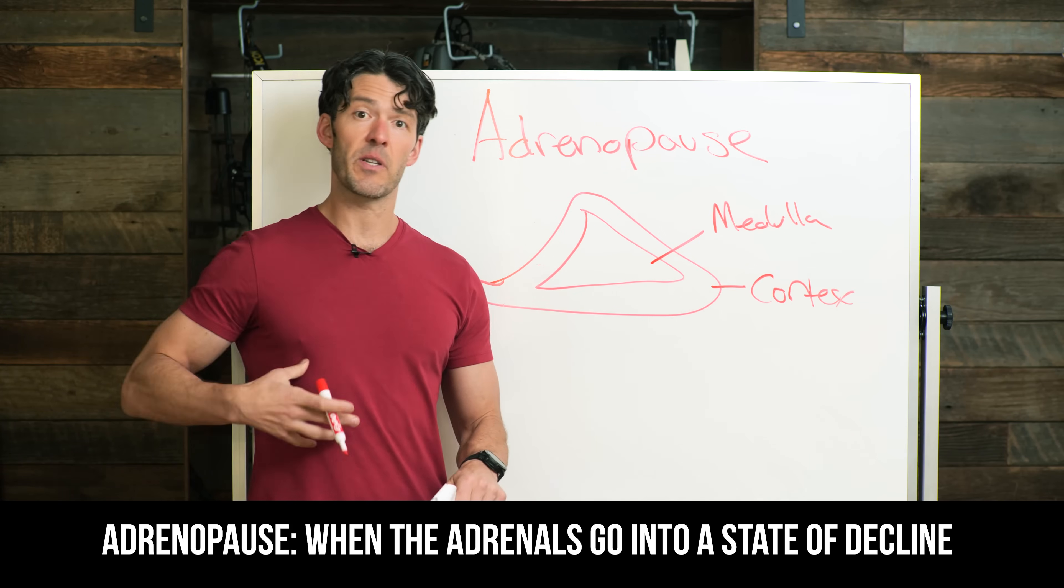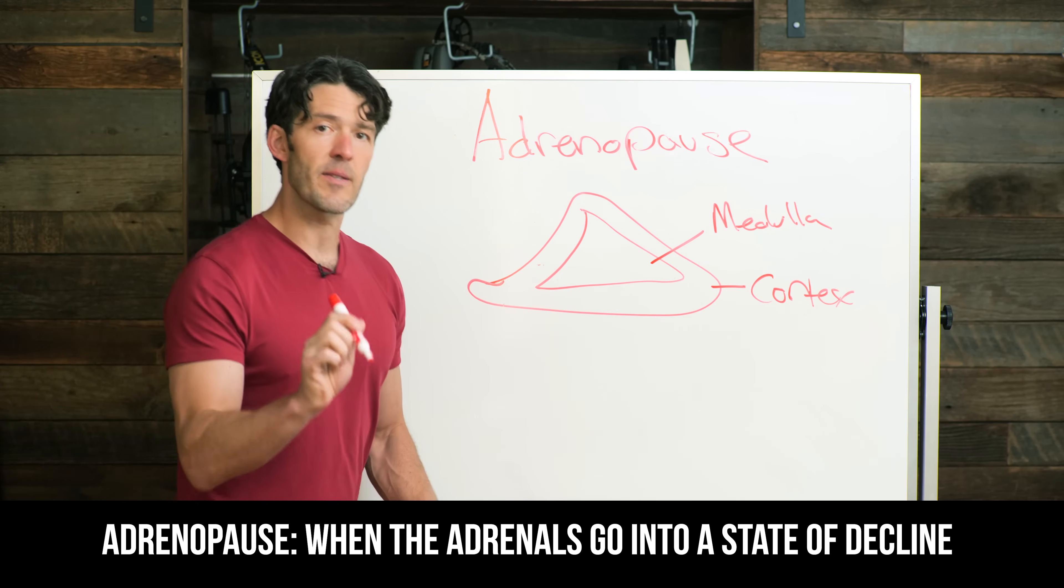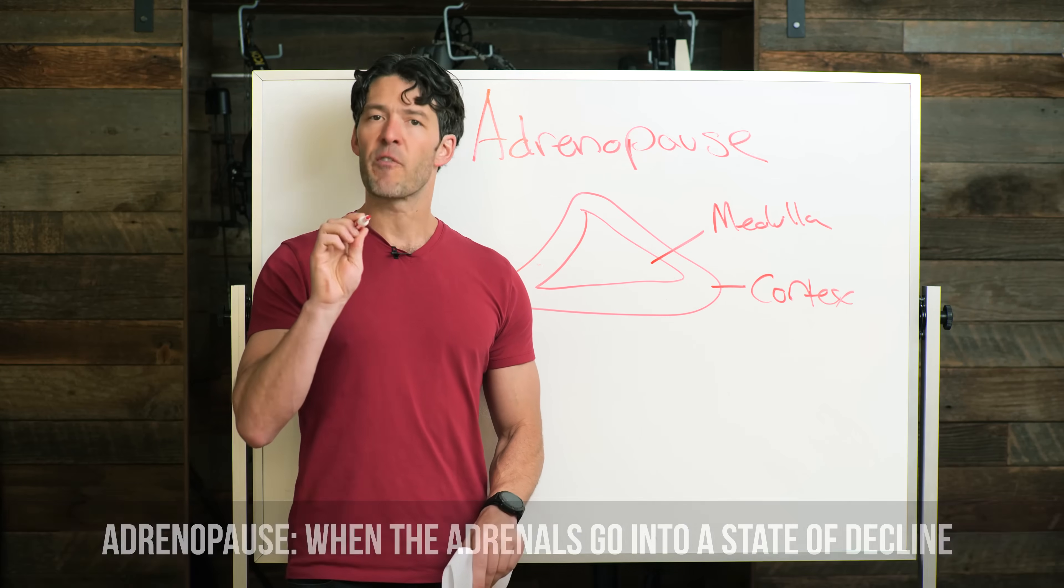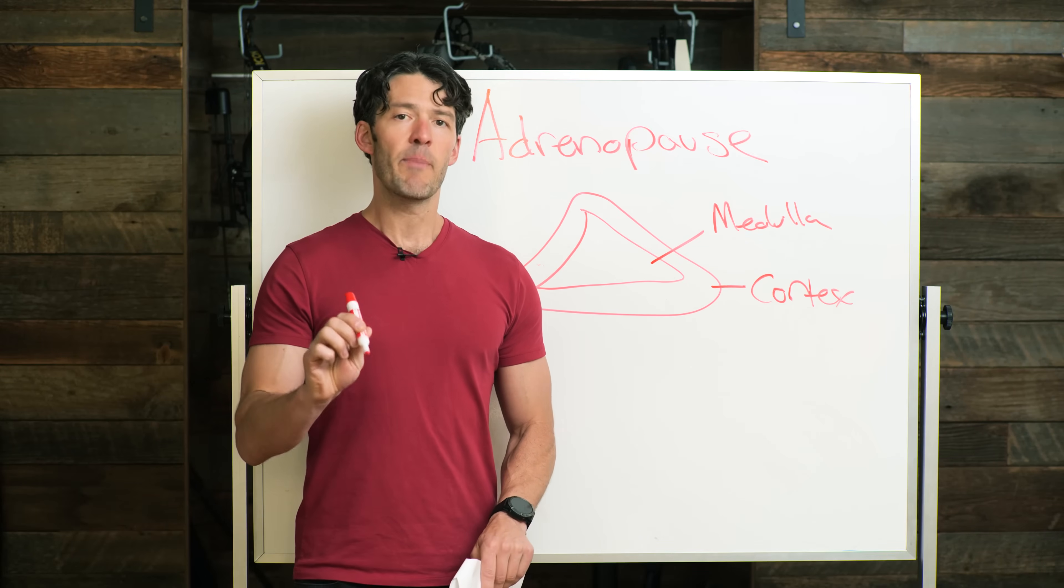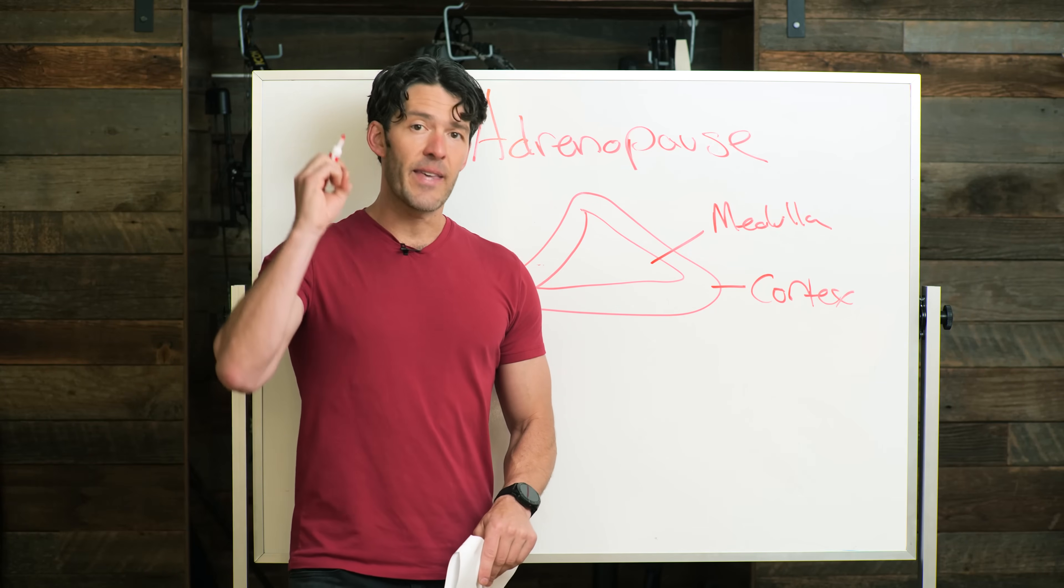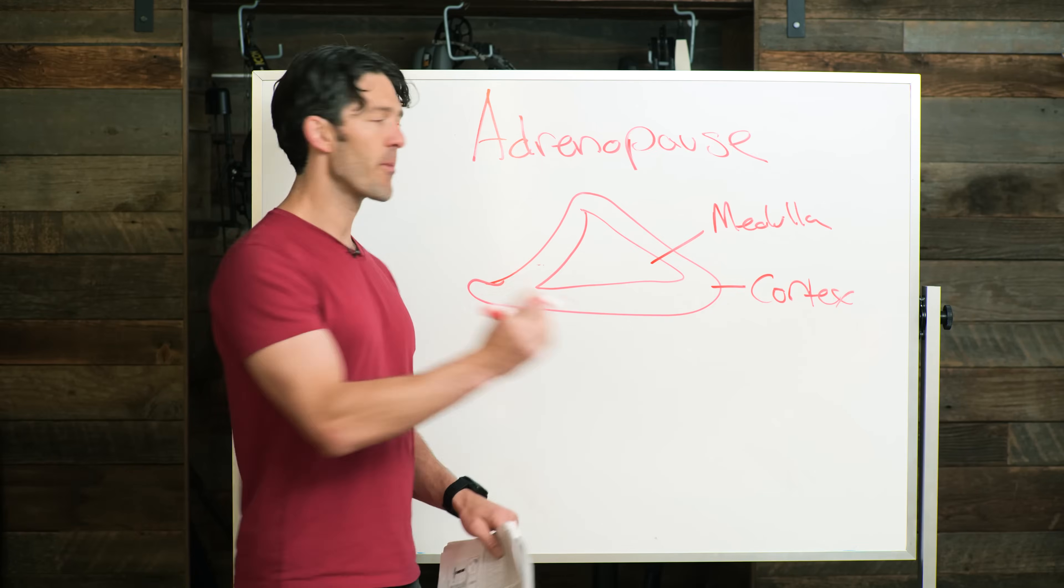This is what scientists have referred to when the adrenals go into a state of decline. The androgens from the adrenal cortex here, this is the adrenal gland. As you know, they sit sort of on top of the kidneys. You have two adrenal glands. You go through adrenopause, and this is really important.